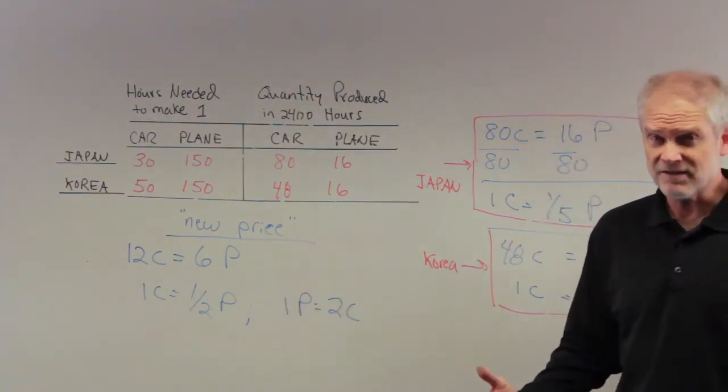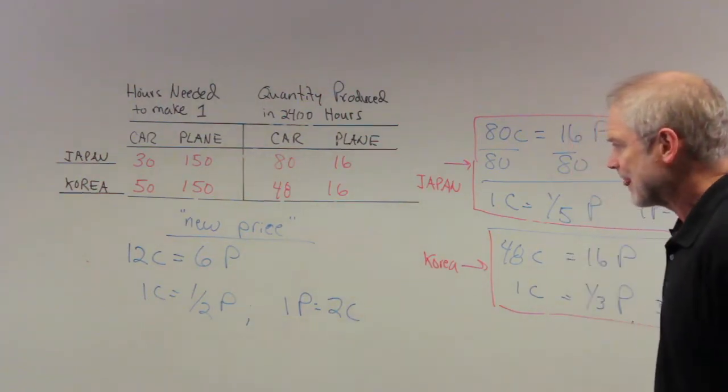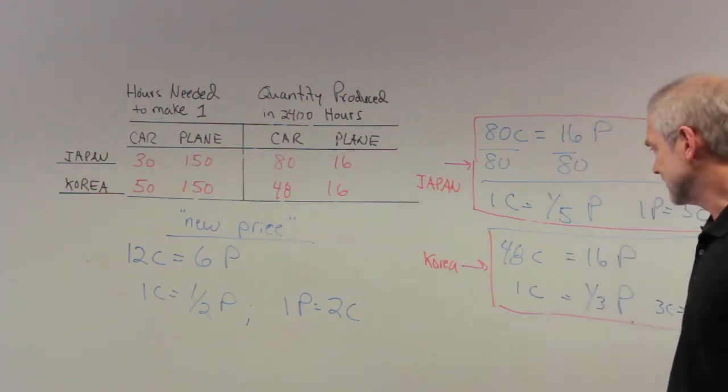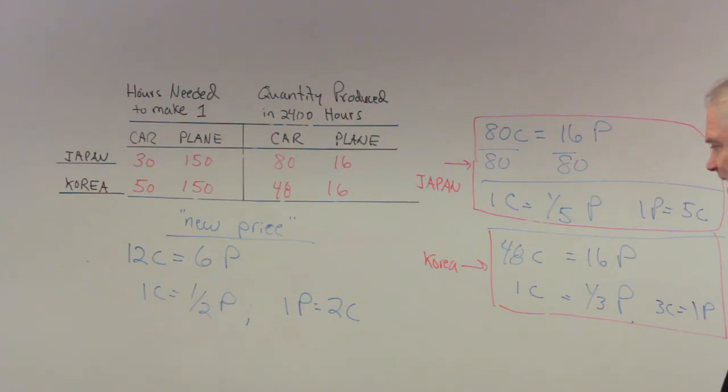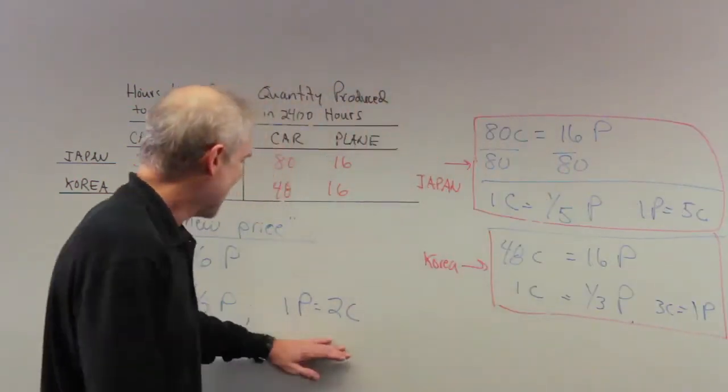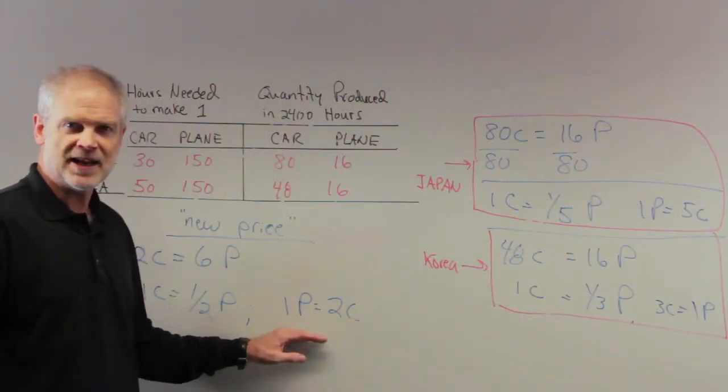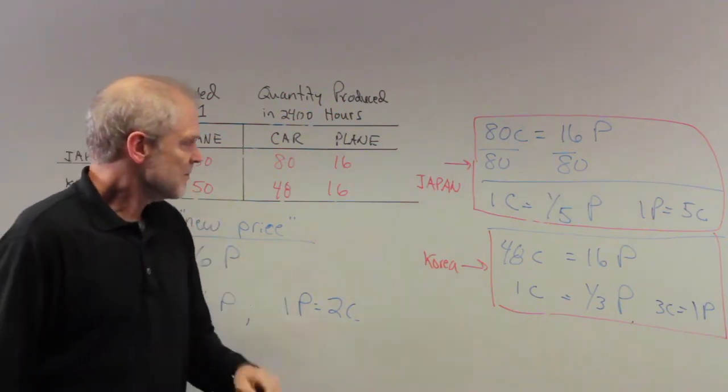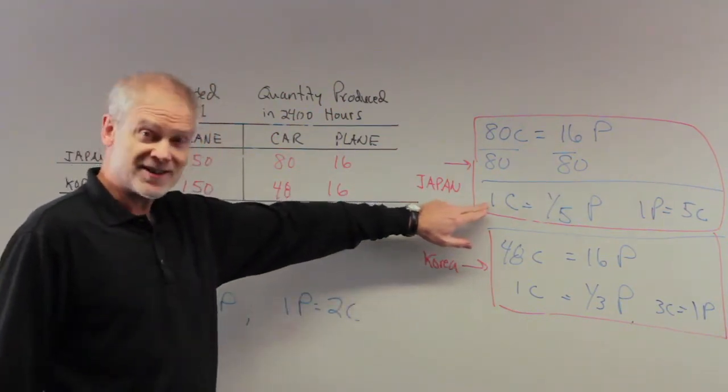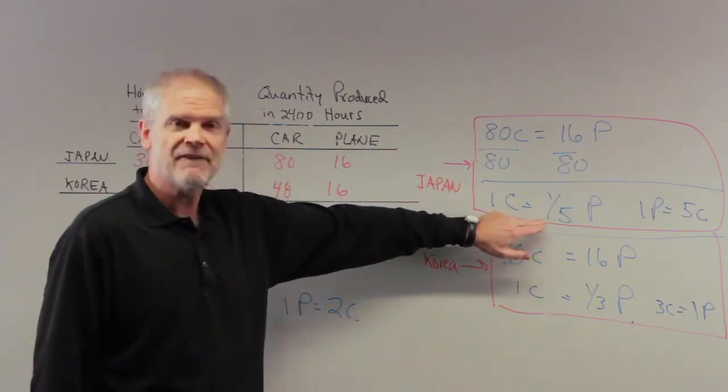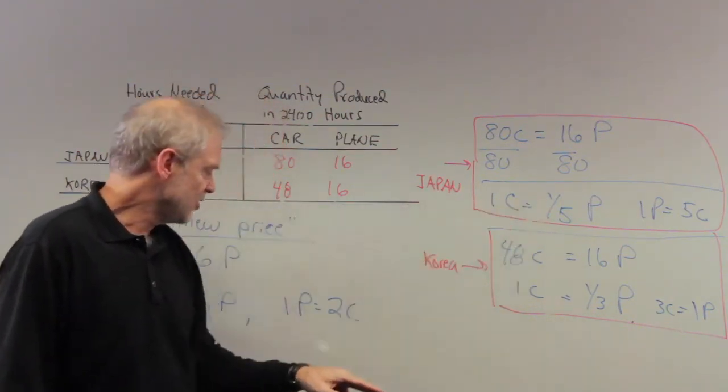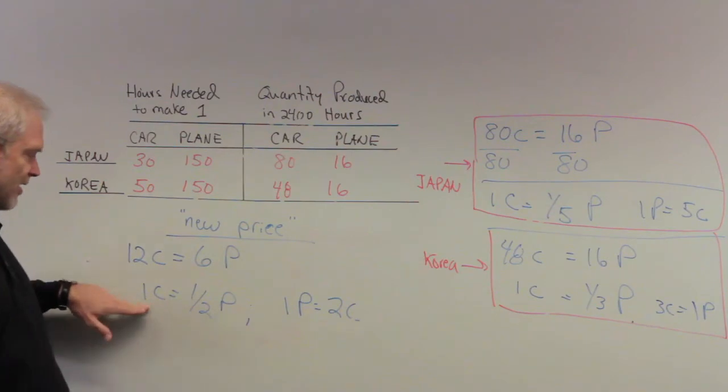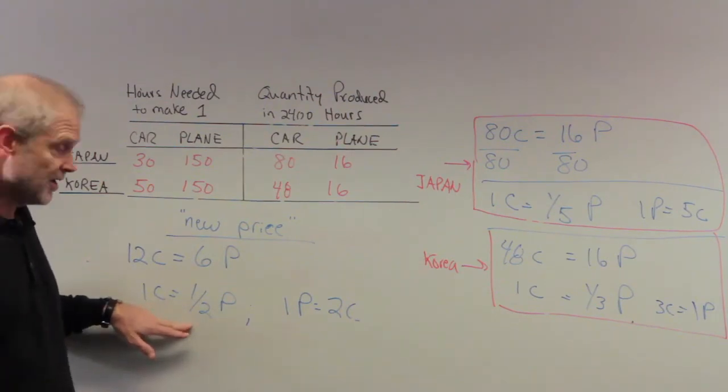And the question is, does anyone gain here? Does this hurt anybody? Well, Japan would say, hmm, I'm specializing in cars. And at this price, I can spend two cars and get one plane? For Japan, that is an amazing deal. Why? Because here, one of their cars internally can only buy a fifth of a plane. But at these new prices, one of their cars can buy a half a plane.